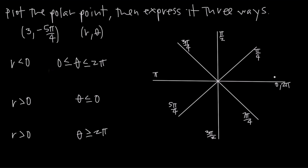Starting at angle 0 in the positive direction: 1 pi over 4, 2 pi over 4 (or pi over 2), 3 pi over 4, pi, 5 pi over 4, 6, 7, 8 pi over 4, and so on. But we have a negative angle, so we have to go to negative 5 times pi over 4.